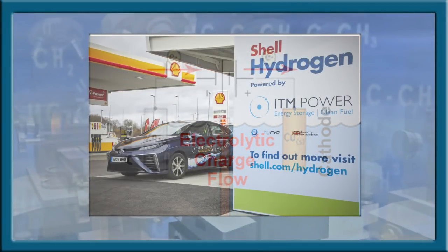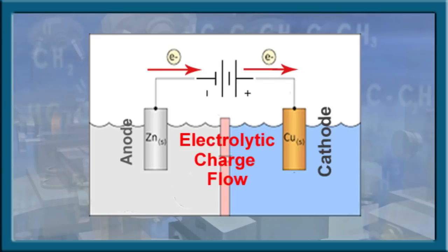Conventional electrolysis is a process of passing electricity through water, causing the hydrogen atoms to separate from the oxygen atom. Basically, electricity here is the key factor to produce hydrogen energy. So where does that electricity come from?